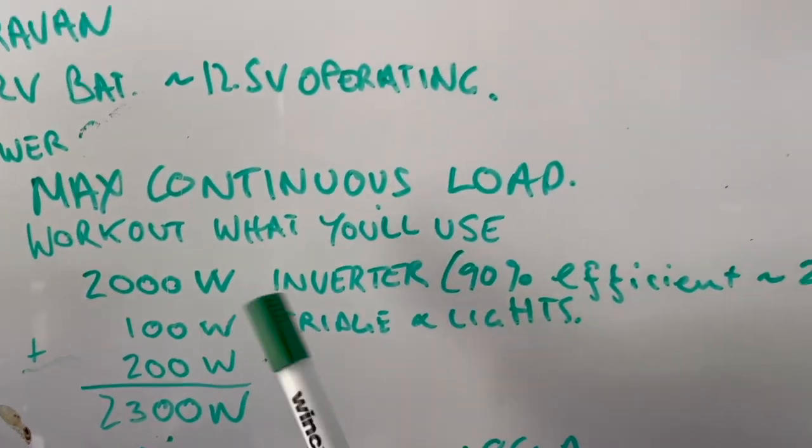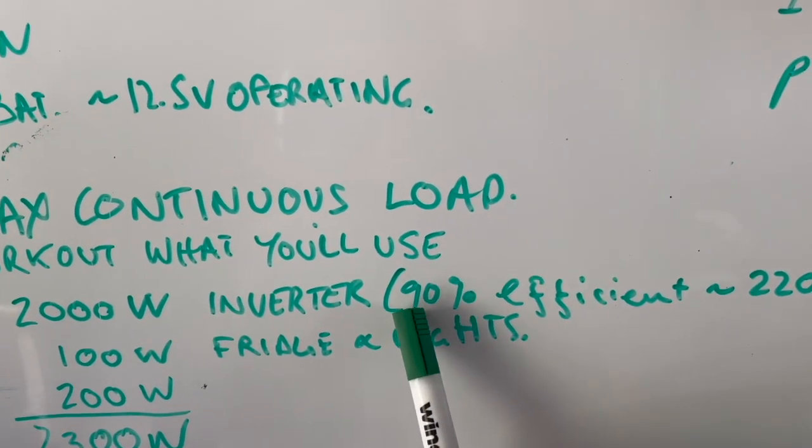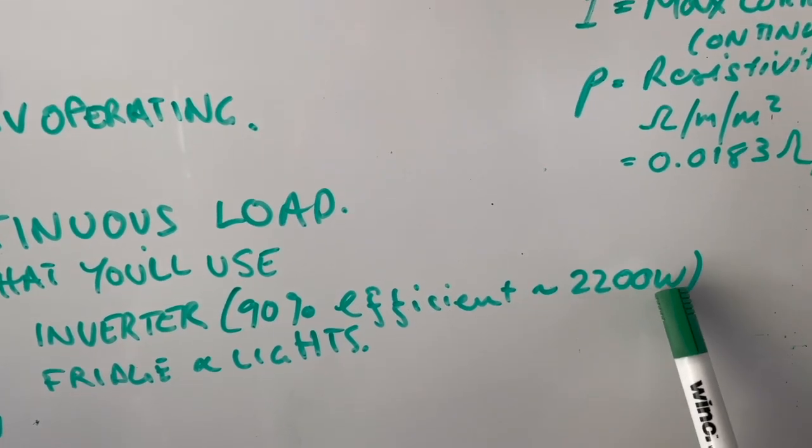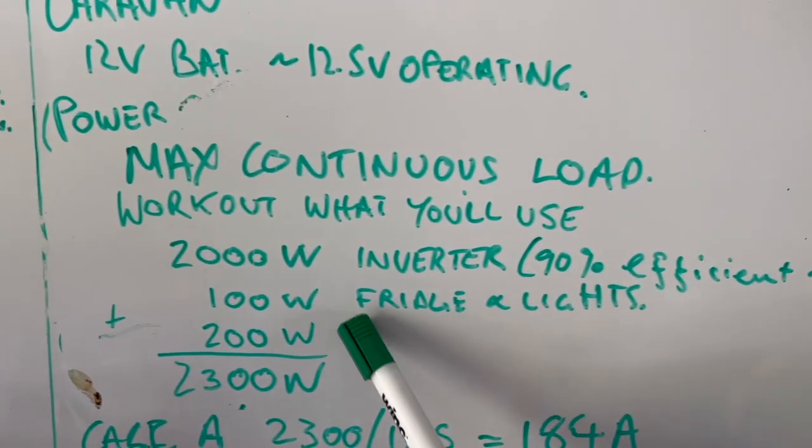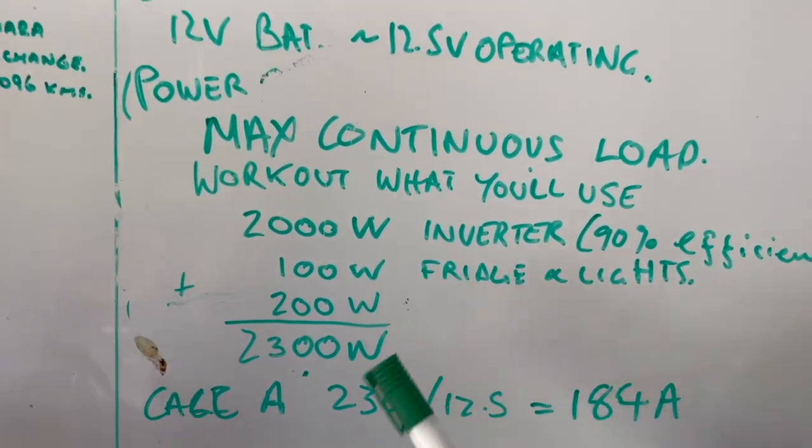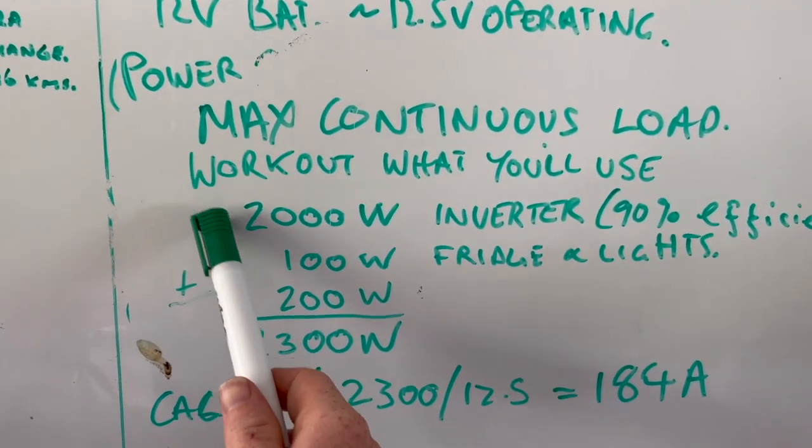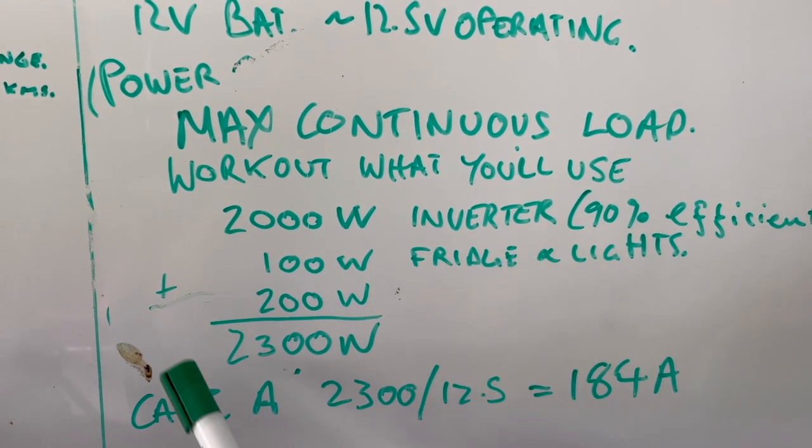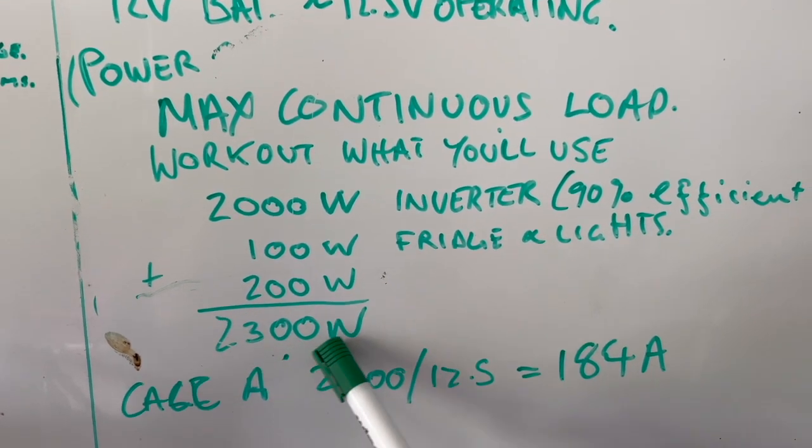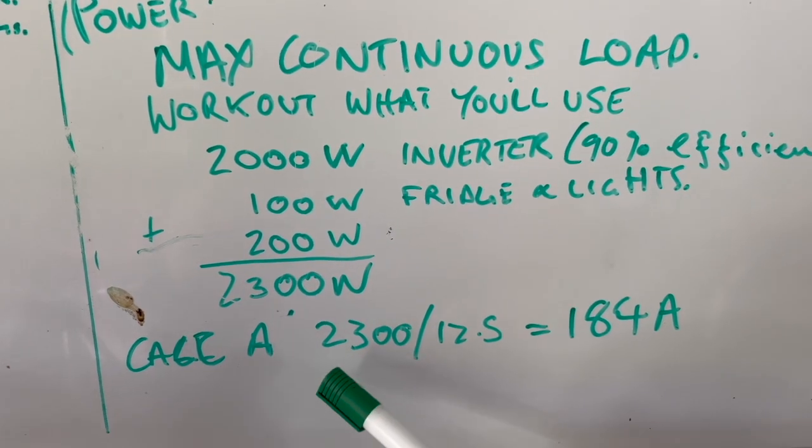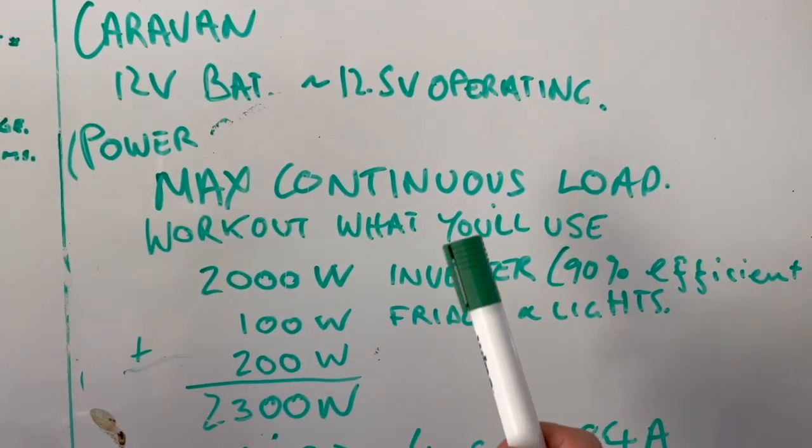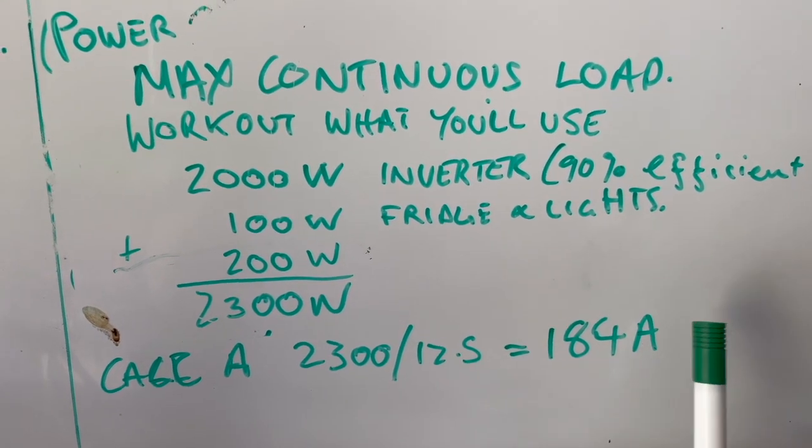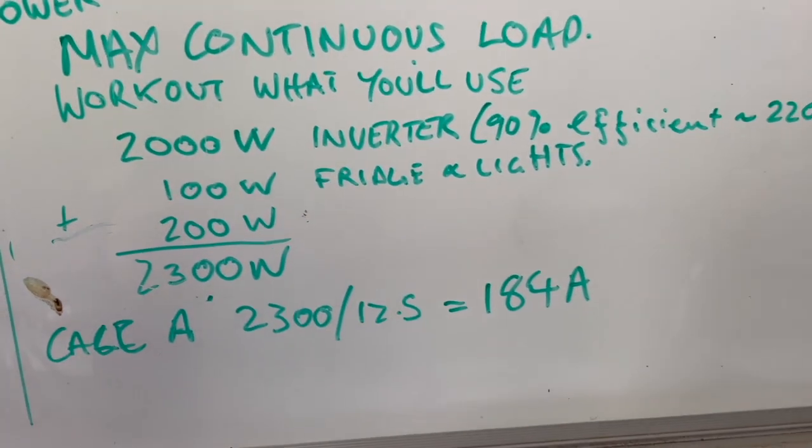So, inverters are not 100% efficient, you get this out of their specs, say it's a 90% efficient, we'll give you 2200 watt approximately, so I'll just add that 200 watt. We're saying that we're going to be running the inverter to its full capacity for an extended period of time, along with the fridge and the lights, giving us 2300 watt draw. To calculate amp, you do 2300 divided by that operating voltage, 12.5 volt battery bank, gives us 184 amps of current.